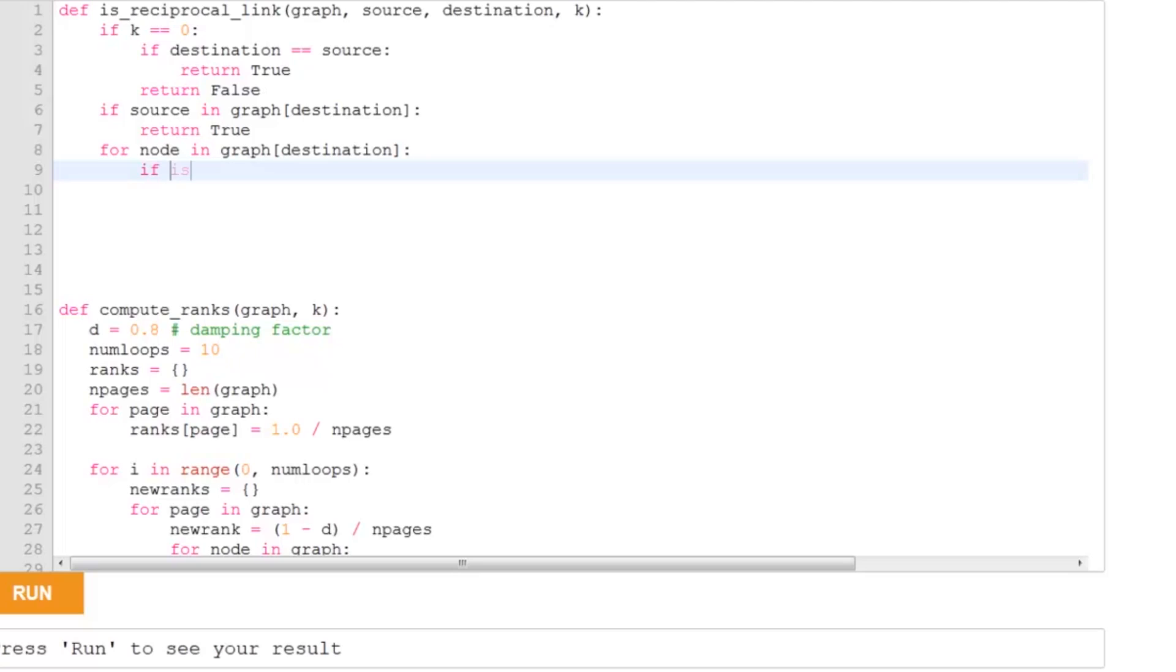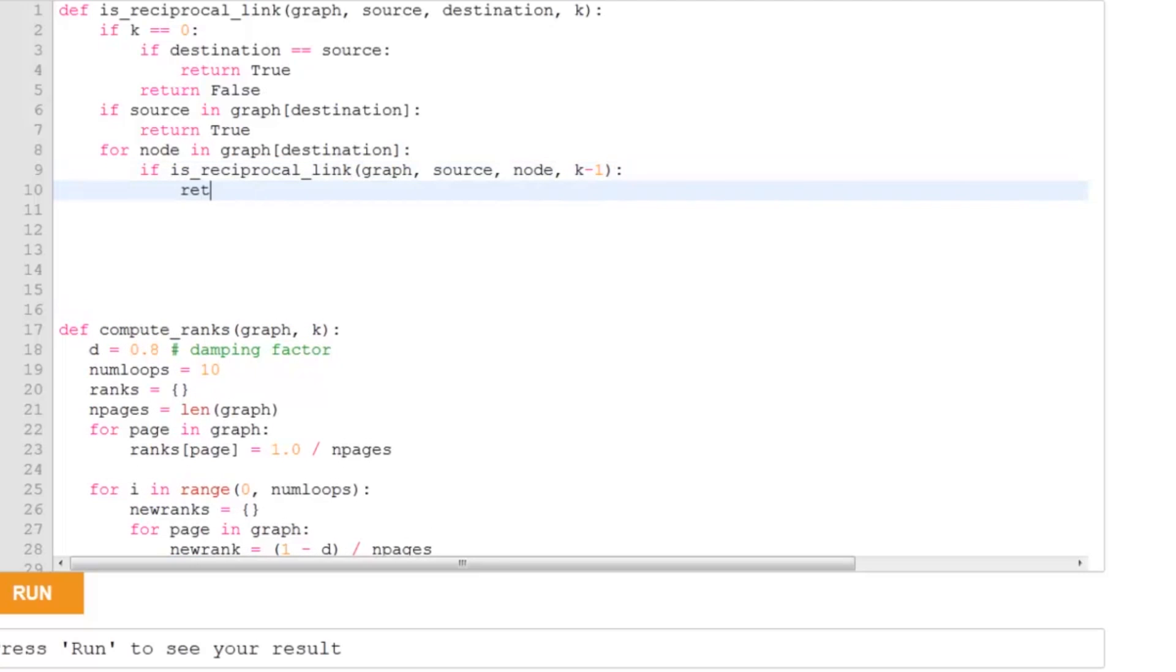So if there is a path, in other words, if reciprocal link graphs, we're in the same graph, we've got the same source, we've got our new node, which is hopefully one step closer to the destination. If that's true, then we're going to return true.